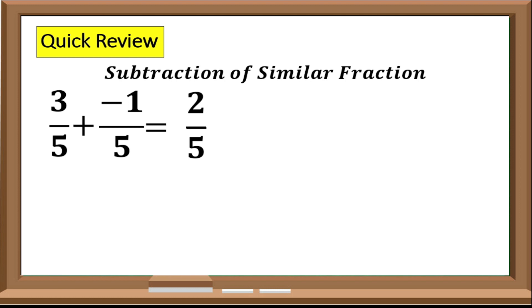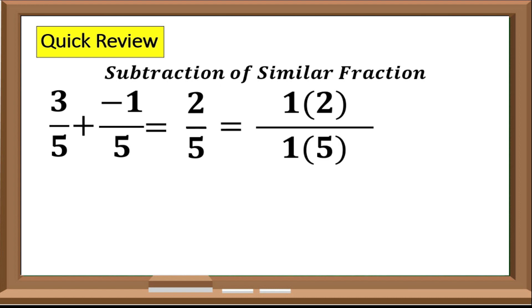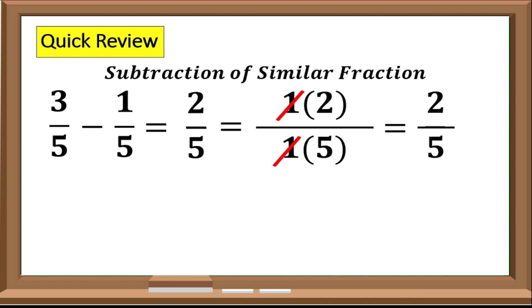Step 3: Factor out the sum in both numerator and denominator. In this case, our numerator is 2, so the factors are 1 times 2. And the factors of our denominator 5 are 1 times 5. Step 4: Divide the common factors that are present in both numerator and denominator. In this example, we have 1. Step 5: Multiply the remaining factors. For the numerator, we have 2, and for the denominator, we have 5. So if you will subtract 3 over 5 minus 1 over 5, that would be equal to 2 fifth, or 2 over 5.